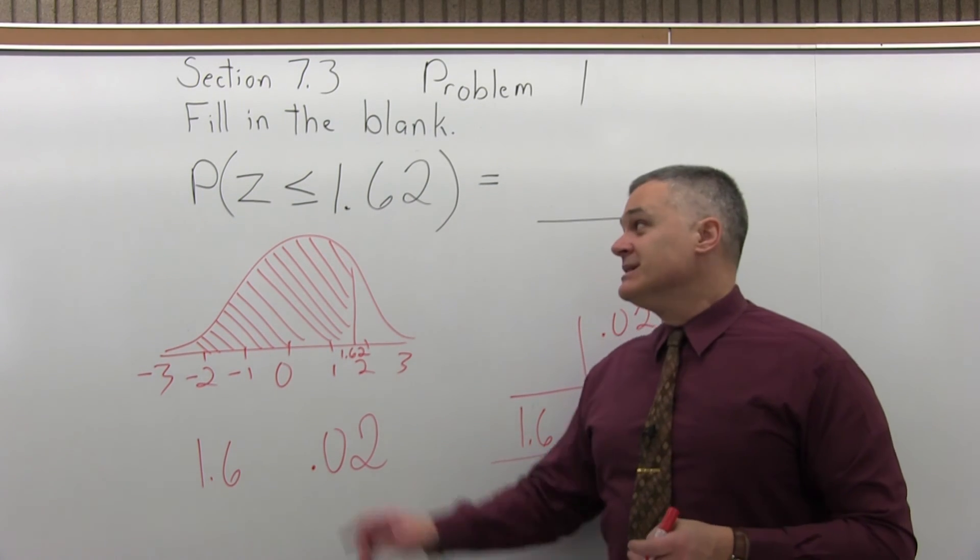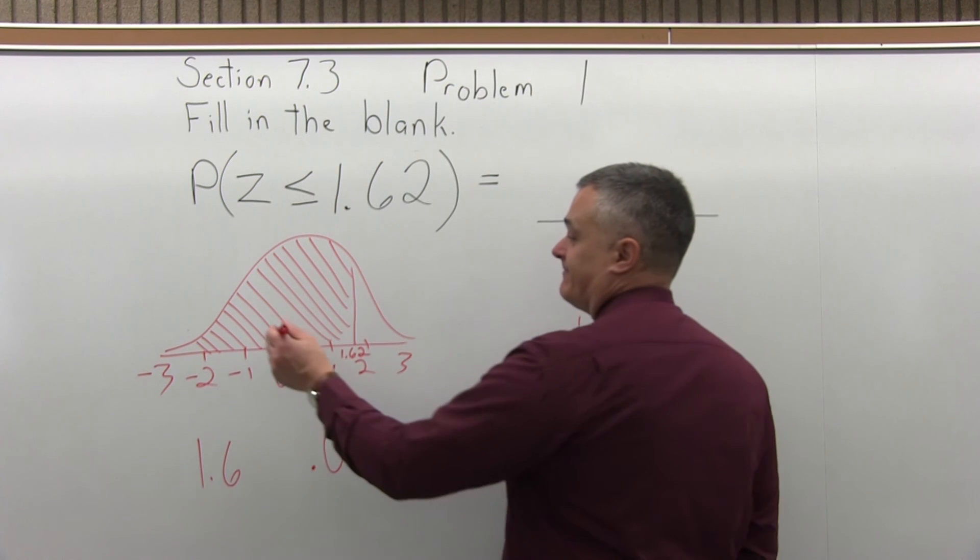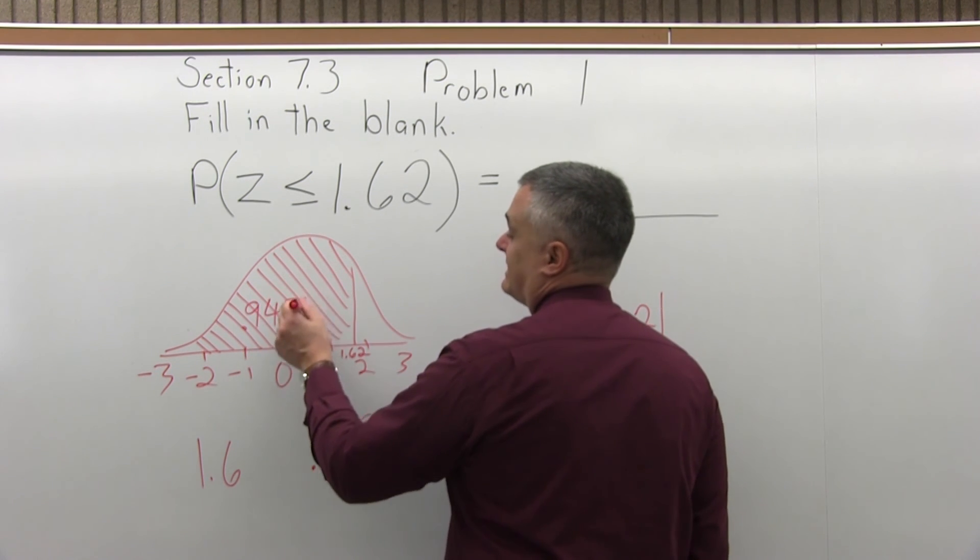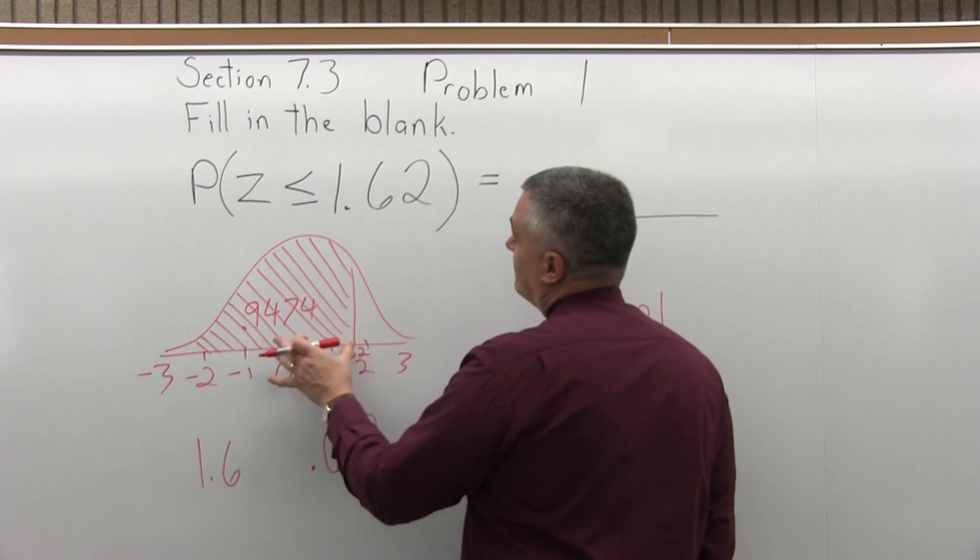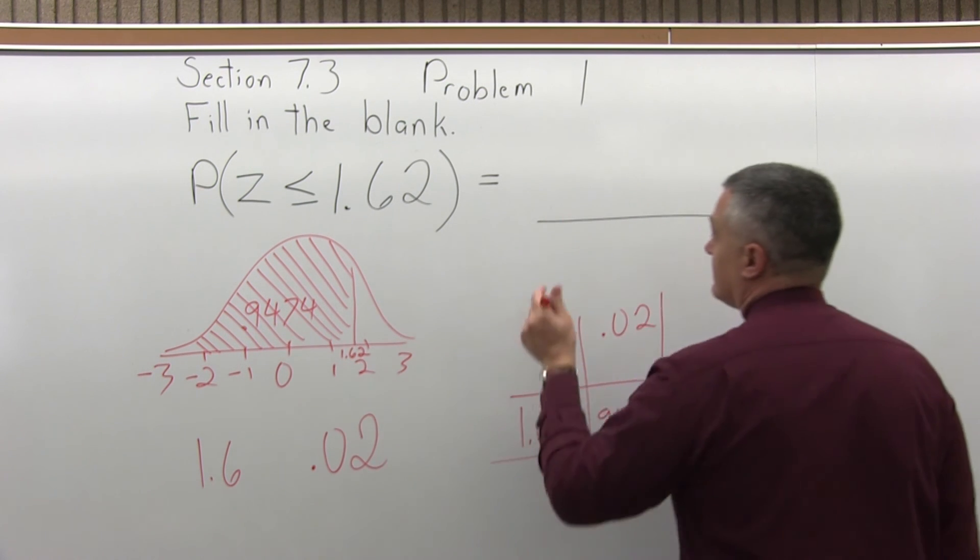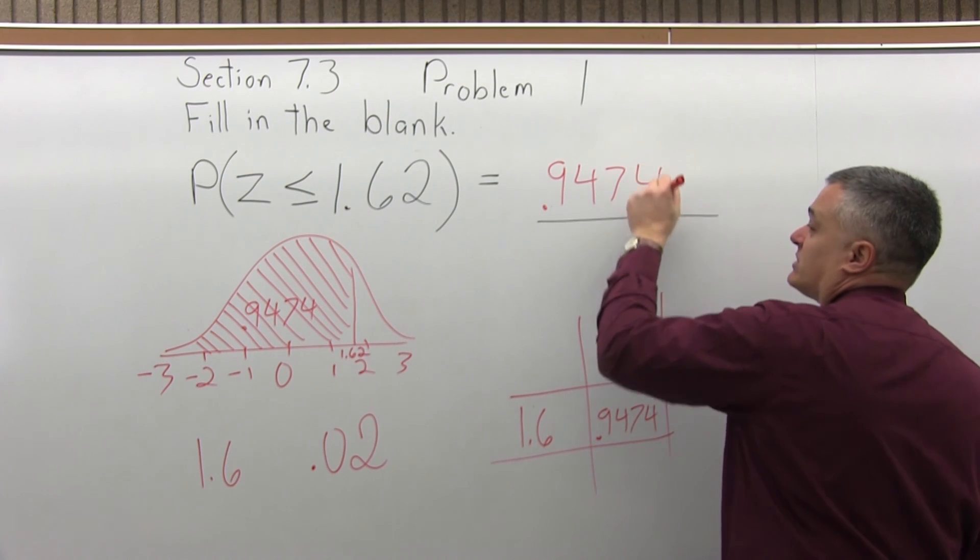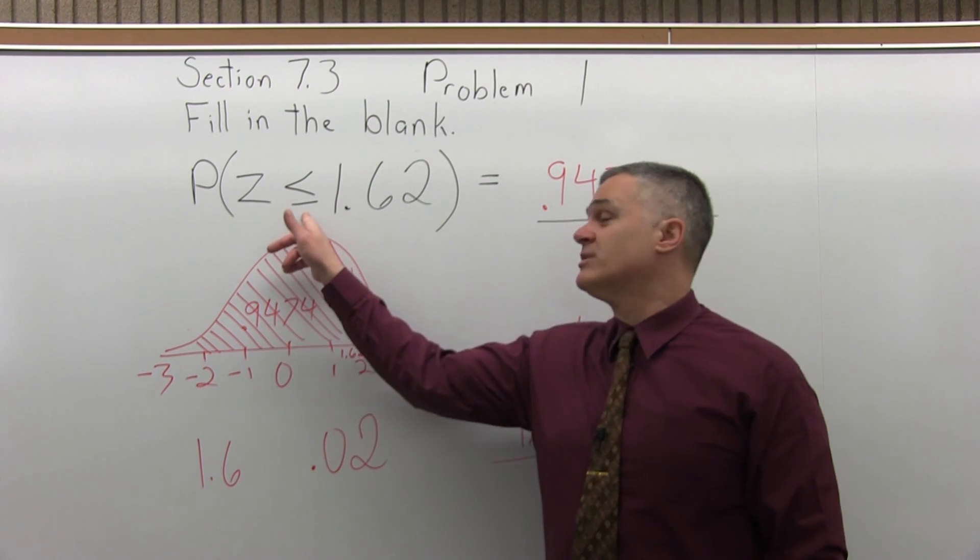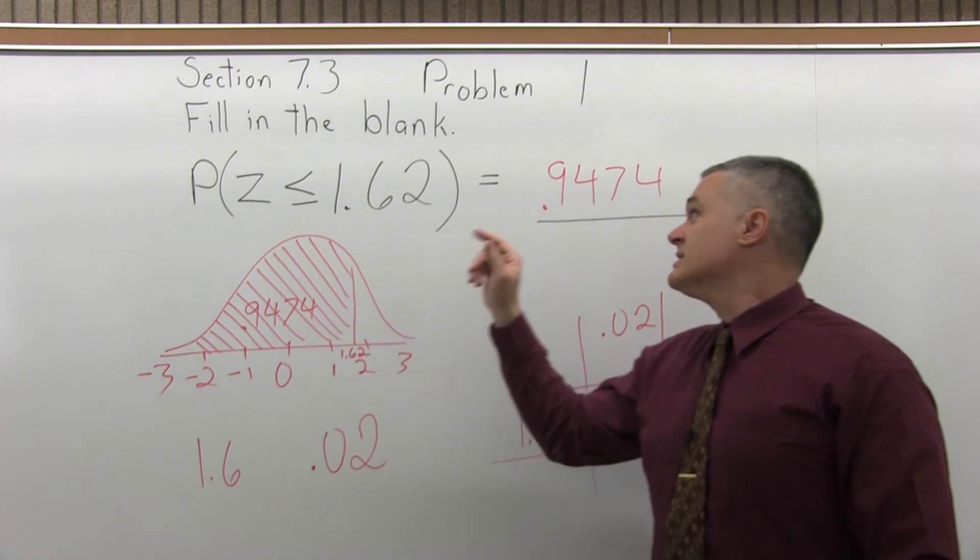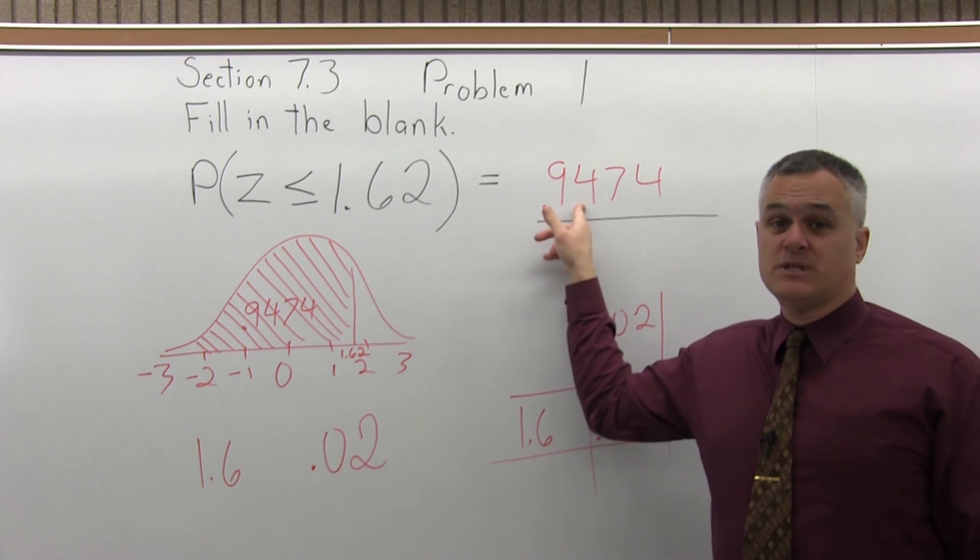So because this is a less than question, we're pretty much done. Less than is the area to the left of on the graph. So the blank is 0.9474. The probability of Z being less than or equal to 1.62 is approximately 94.75% probability.